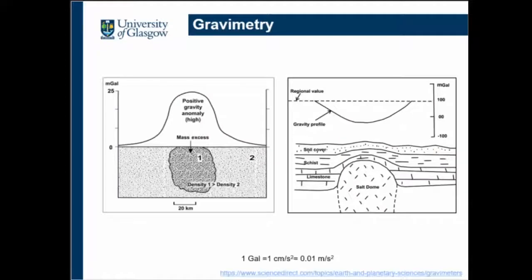So what is gravimetry? Gravimetry is a science used to study density anomalies in the ground. For the same volume, denser objects will have a larger gravitational pull compared to less dense objects. So if you have a gravimeter and you traverse the surface, and there is denser rock underneath the ground, you will see that the local acceleration due to gravity increases. By measuring that profile, you can image what is inside.